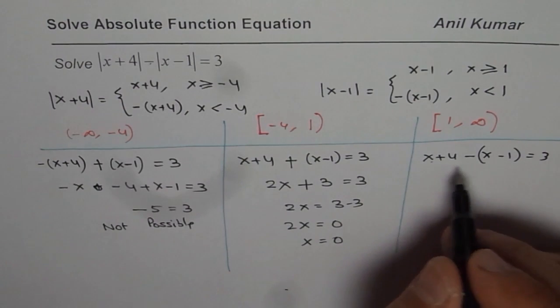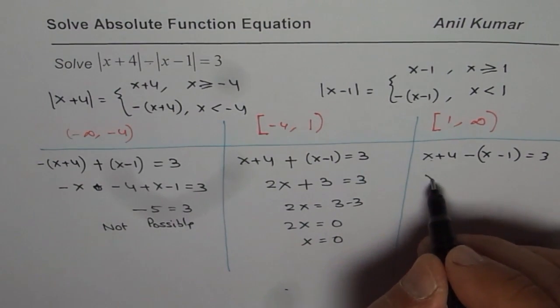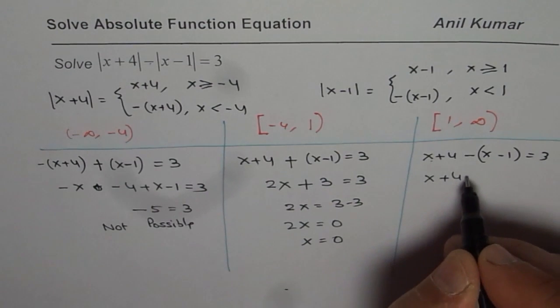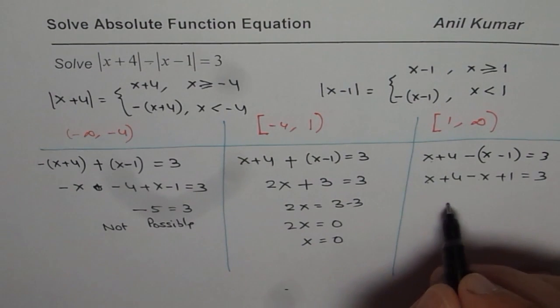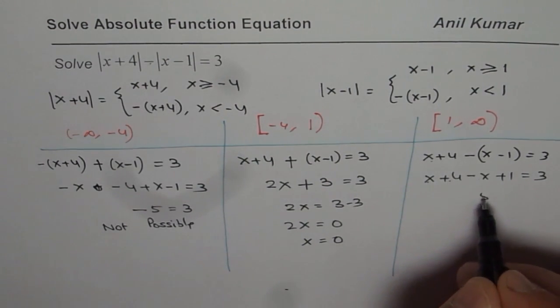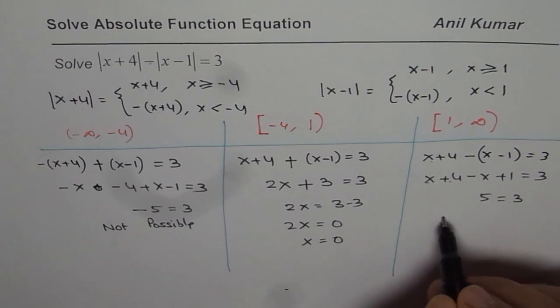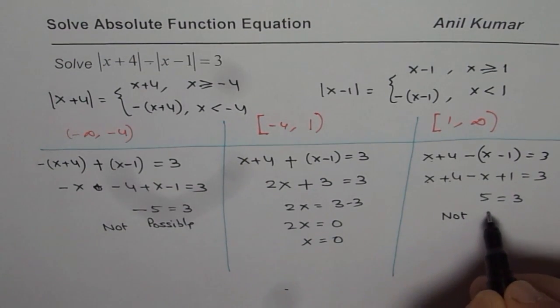When we solve the third equation, we get x-x is 0. Opening the bracket: x+4-x+1 = 3. So 4+1 = 5, giving 5 = 3, which is not possible. That is not true.